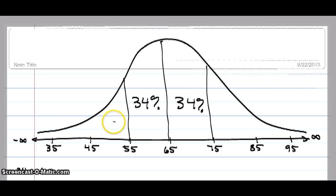And if this whole space is 50%, then 50% minus 34% tells me that I have 16% in each of the tails.